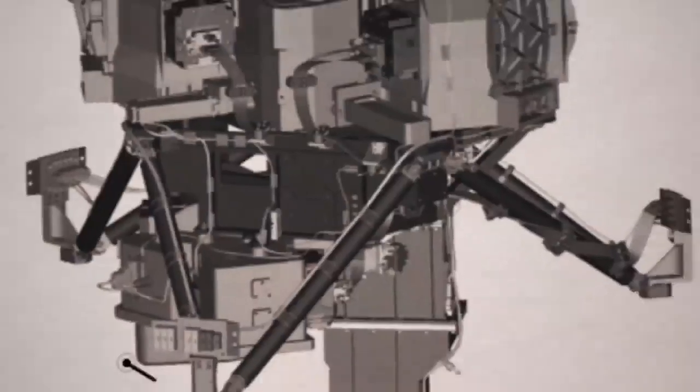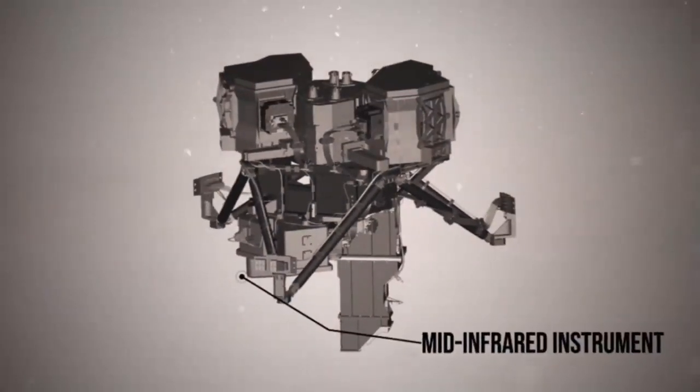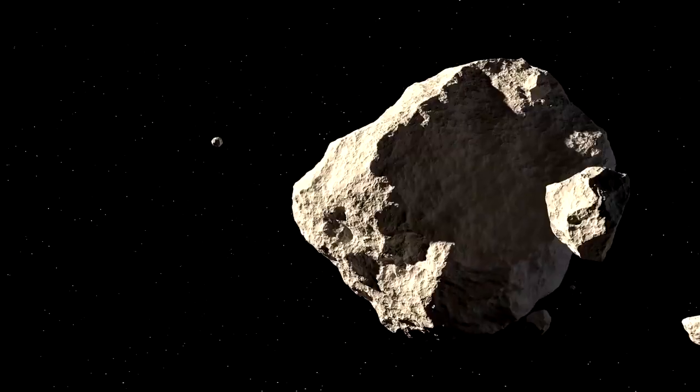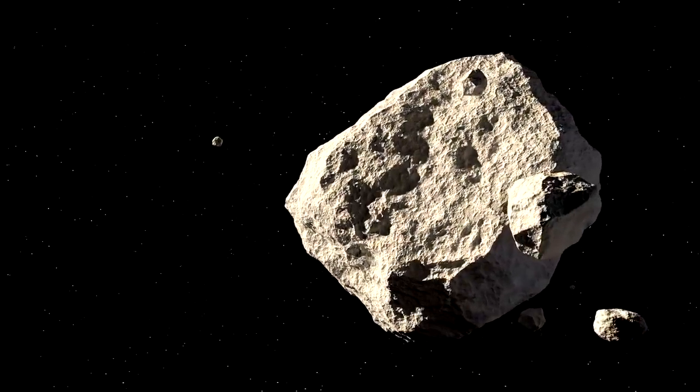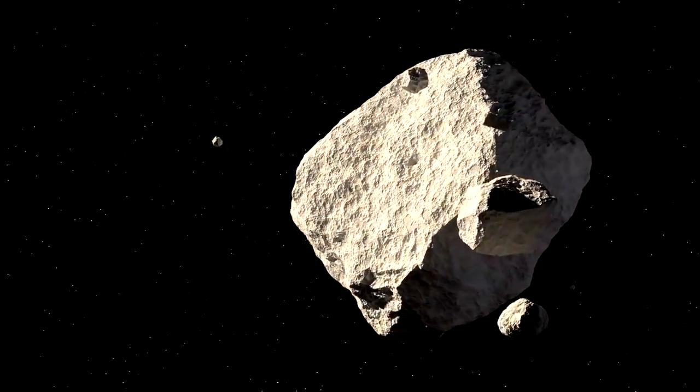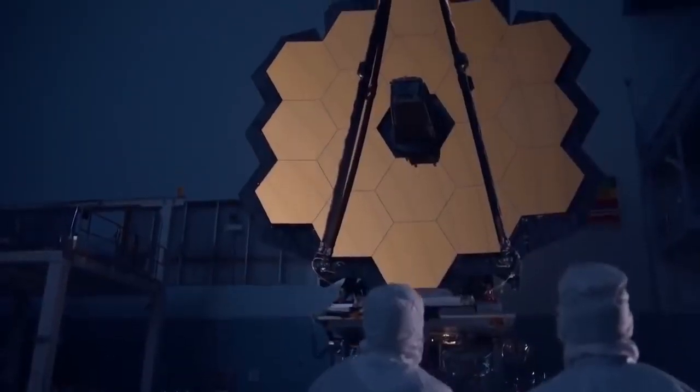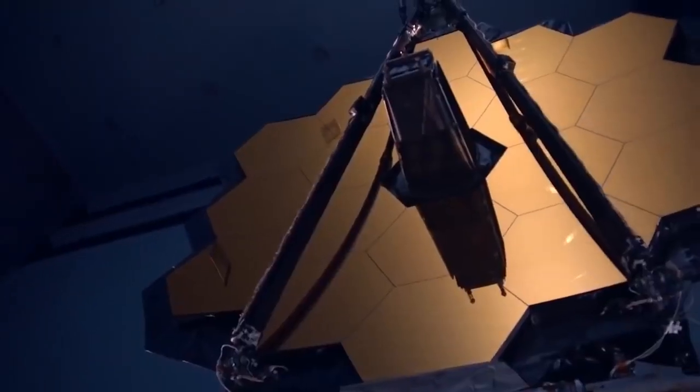So where is the James Webb Space Telescope now, and when will science operations begin? Three mid-course correction maneuvers placed the massive space telescope in a slow-looping orbit around the second Lagrange point, or L2, a stable gravitational location 1.5 million kilometers behind Earth, as seen from the sun.